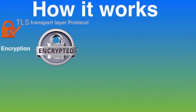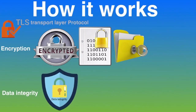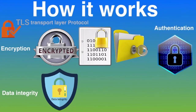The first layer is encryption — encrypting the data to keep it secure from hackers. This means that while the user is browsing a website, nobody can listen to their conversations, track their activities across multiple pages, or steal their information. The second layer is data integrity — data cannot be modified or corrupted during transfer, intentionally or otherwise, without being detected. The third layer is authentication — it protects against man-in-the-middle attacks and builds user trust.